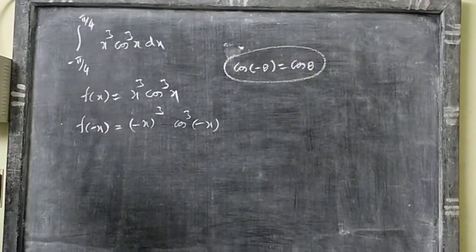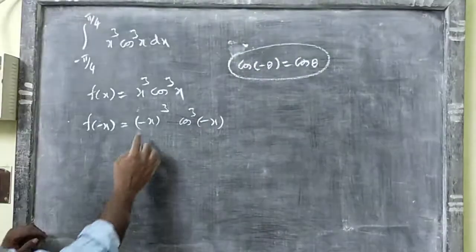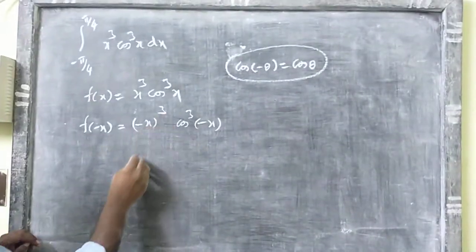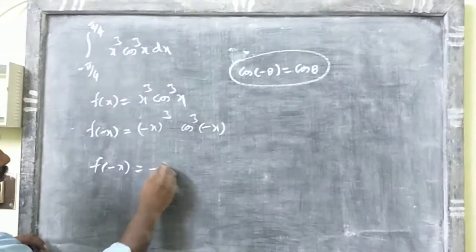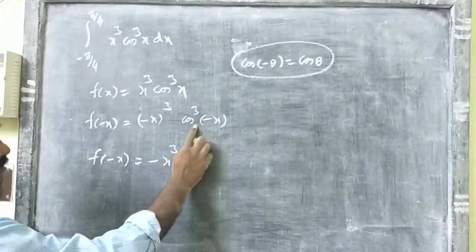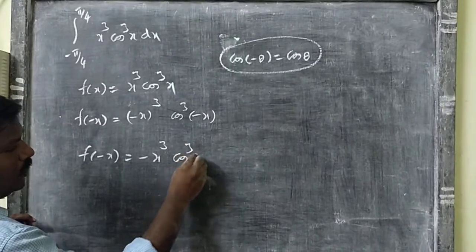That is, cos(-θ) is equal to what is it? Cos(θ). So what is f(-x)? f(-x) is equal to minus x the whole cube, minus x cube. Cos(-x), the cos will be positive.